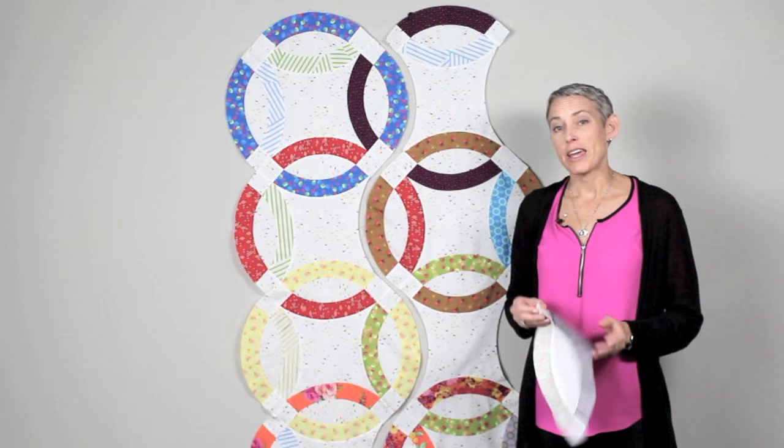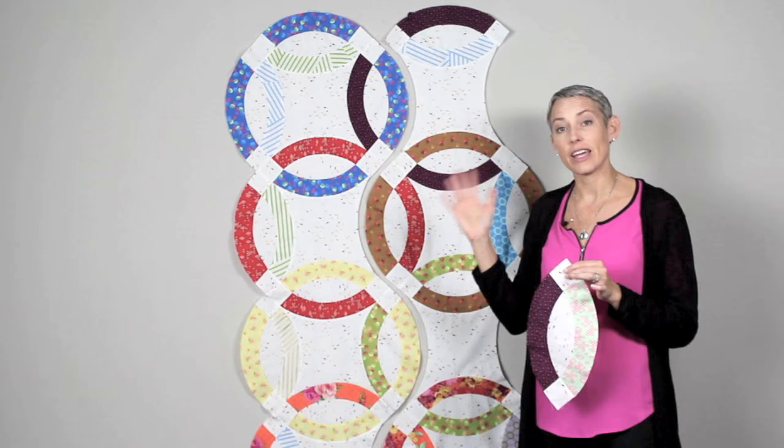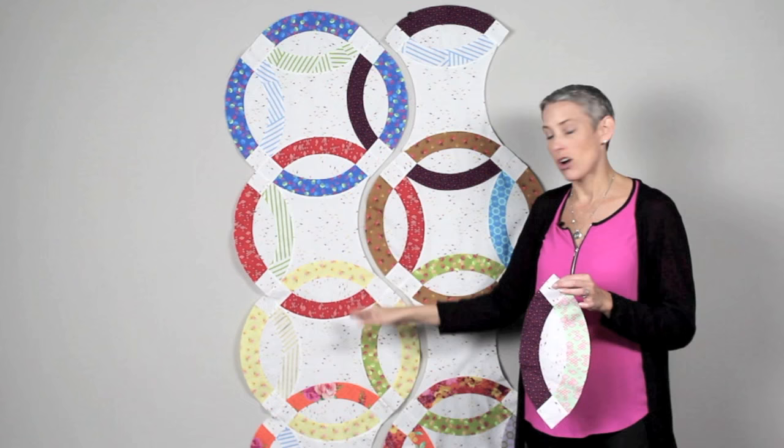The first thing you need to do when you make your double wedding rings is to make all of your melon pieces. You're making your cornerstones with your arcs and your small melons, and the best thing that you can do is to lay the quilt out on a design wall if you can. Then you're going to attach all of them to your concave squares.